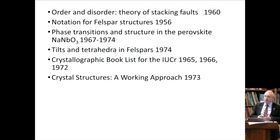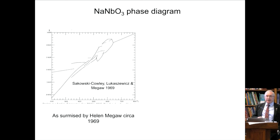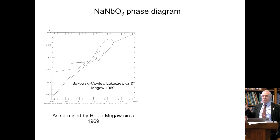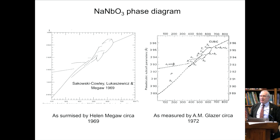She wrote an excellent book — Crystal Structures: A Working Approach, in 1973. When I joined the department, she had done some work with Sikorski and others, publishing a paper on the phase transitions in sodium niobate, which showed a really complicated set of phases — a lot of it was guesswork. My job was to invent a proper high-temperature camera so we could verify how much of this was true. I produced the correct phase diagram for this material, but Helen had been able to work much of it out with a lot of guesswork involved. That's how clever she was.